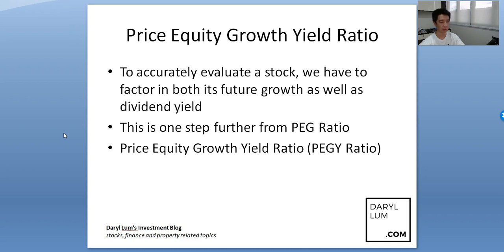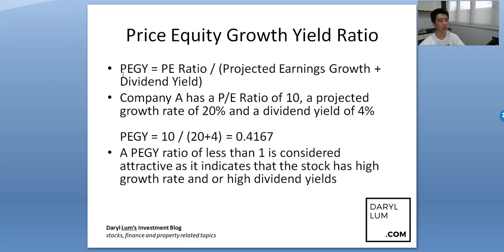So now it's the price equity growth yield ratio, which is the PEGY ratio, and it factors in dividend yield. The formula is: PEGY equals PE ratio divided by projected earnings growth plus dividend yield. You add the projected earnings growth and dividend yield together first, then take the PE ratio divided by that answer.